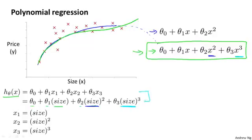In order to map these two definitions to each other, the natural way to do that is to set the first feature x1 to be the size of the house, set the second feature x2 to be the square of the size of the house, and set the third feature x3 to be the cube of the size of the house. And just by choosing my three features this way and applying the machinery of linear regression, I can fit this model and end up with a cubic fit to my data.